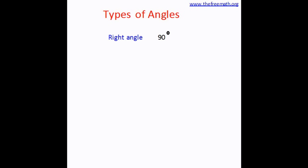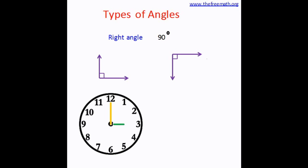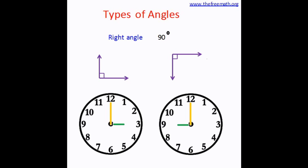Let's look at types of angles. The first type is right angle. A right angle is an angle that measures 90 degrees, so it could look like this or like this. The hands of a clock make 90 degrees at 3 o'clock. What other time can you think of when you will see a right angle? Yes, 9 o'clock also makes a right angle.